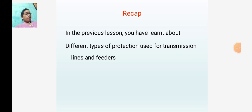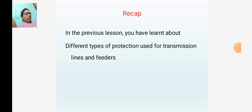For the purpose of protection, the bus bar zone includes the bus bars, the circuit breakers, and isolating switches. When a fault occurs on a particular section of a bus bar, all circuit equipment connected to that section must be tripped out to isolate the section completely.